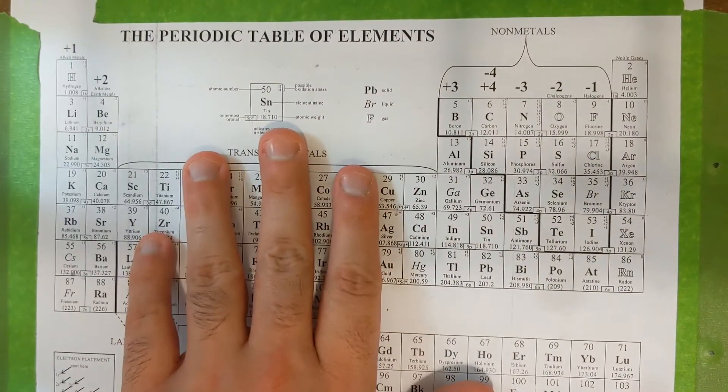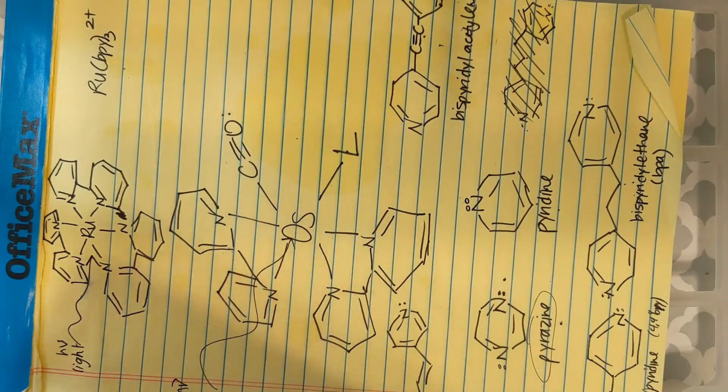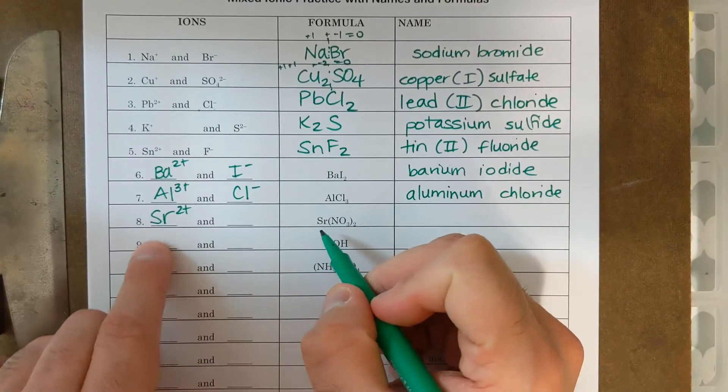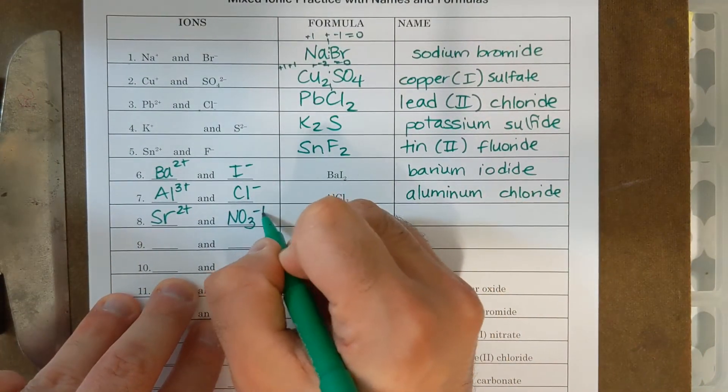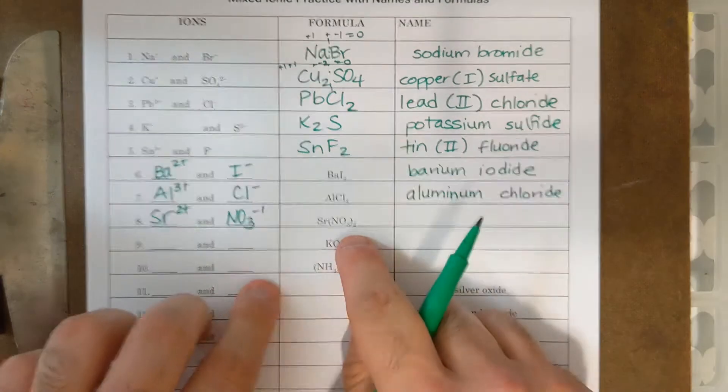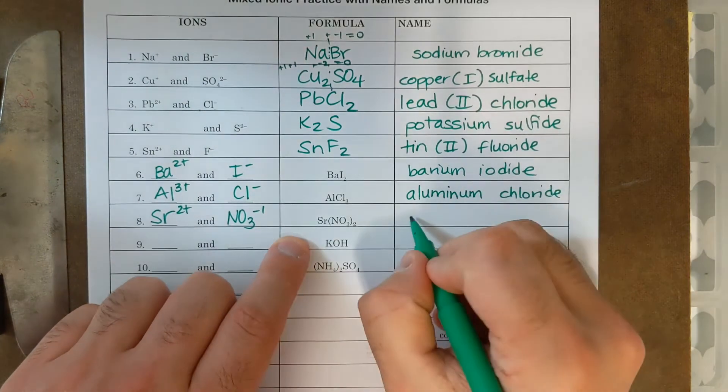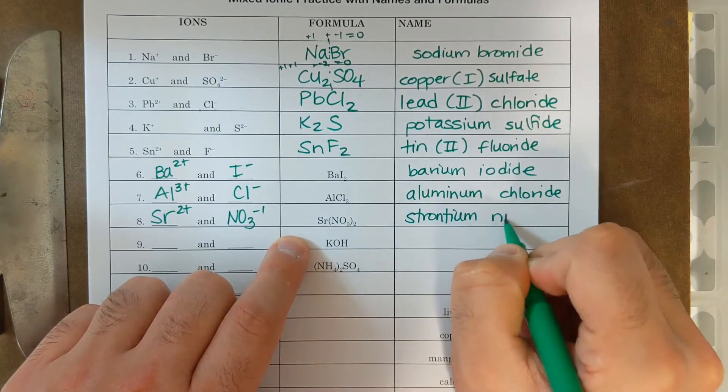For the transition metals in the middle, we're going to need Roman numeral, or the charge given to us to figure that out, or figuring out its charge from whatever compound it's bound to. Alright, so we got SR is two plus, NO three is minus one, and there's two of them. SR is not a transition metal, so it's strontium. NO three is a polyatomic ion, nitrate. This is just strontium nitrate.